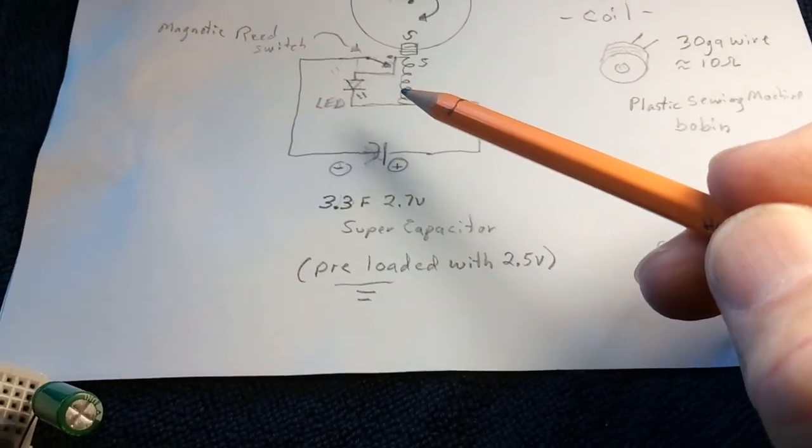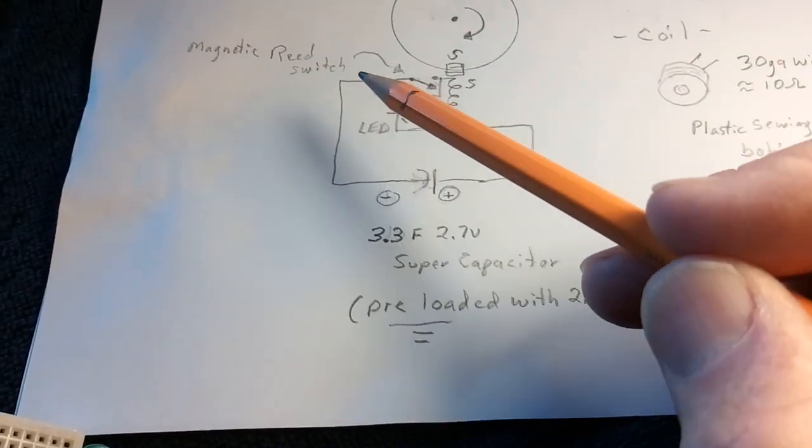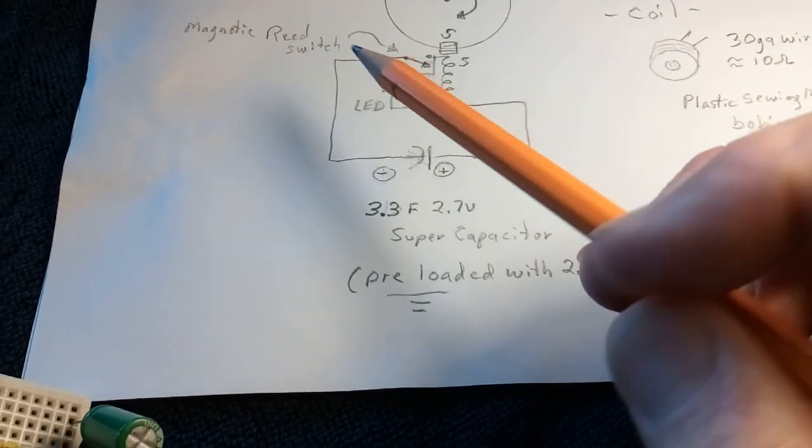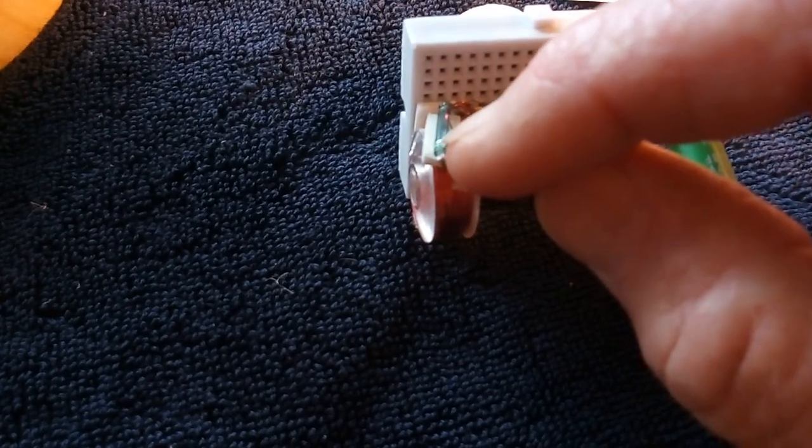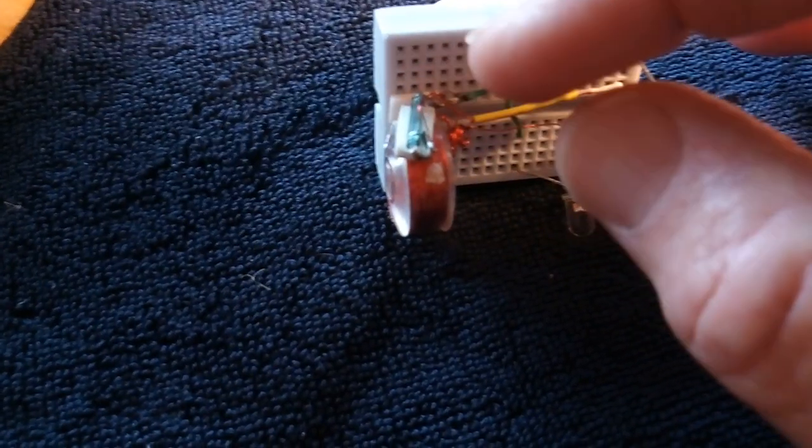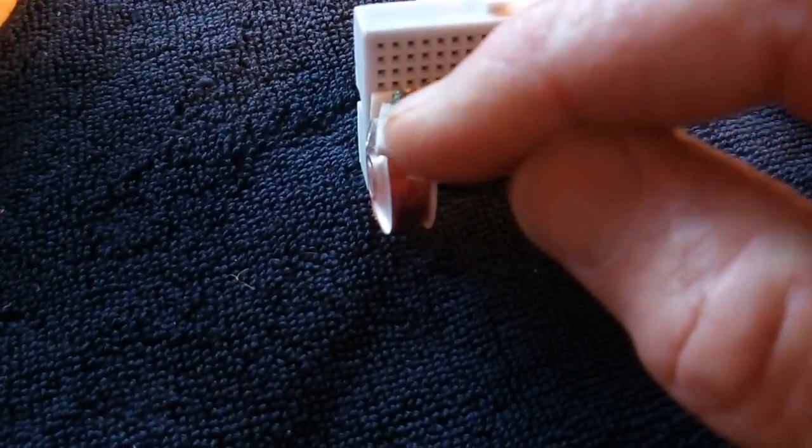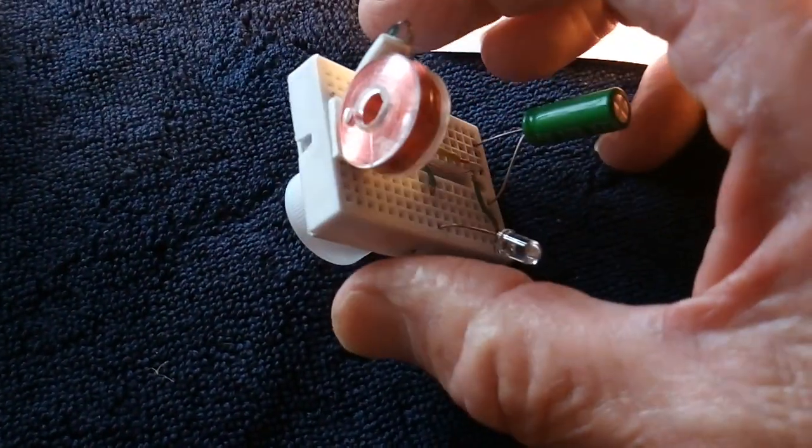It's operated with a magnetic reed switch. Here again, you get it on Amazon or eBay. That's the little switch right there. When a magnet goes by that, it closes. It's normally open and the magnet closes the switch.